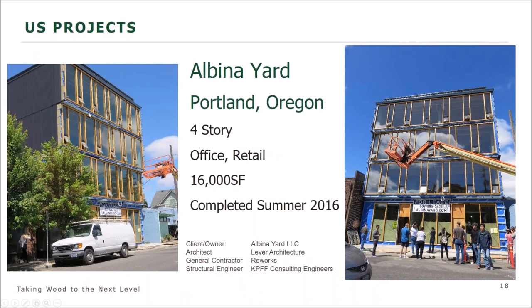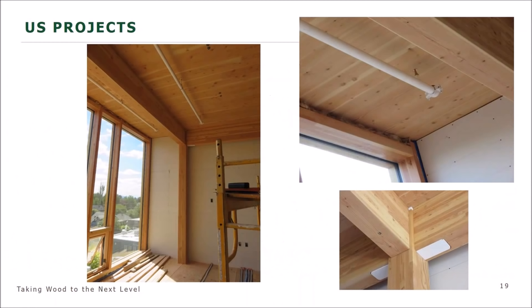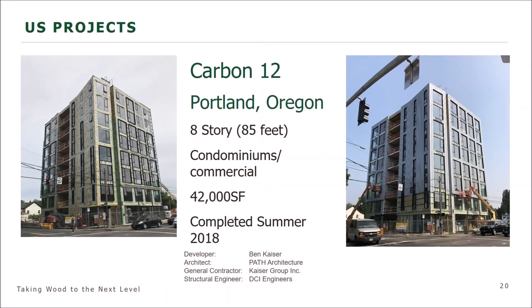The Pacific Northwest is an area where CLT is really taking off. One example is the Albania Yard in Portland, Oregon — four stories of cross-laminated timber combining office and retail, completed in 2016 using CLT construction with cross glue-laminated timber beams and columns. Recently in the summer of 2018, the tallest CLT or mass timber construction in the U.S. was completed: Carbon 12 — eight stories at 85 feet, luxury condominiums with first-floor commercial and residential above, 42,000 square feet.